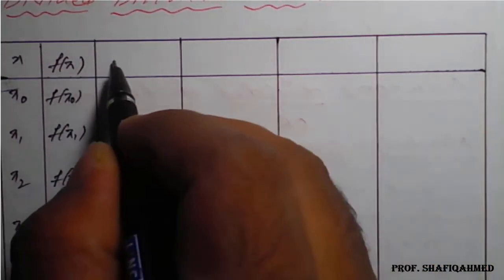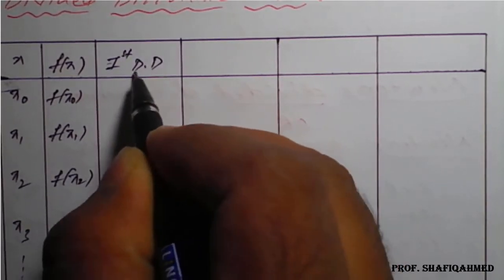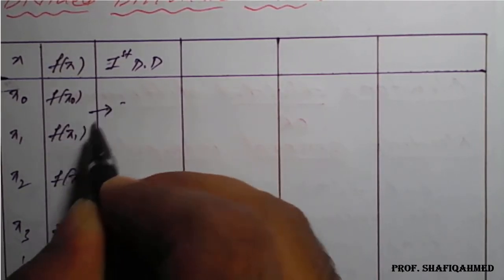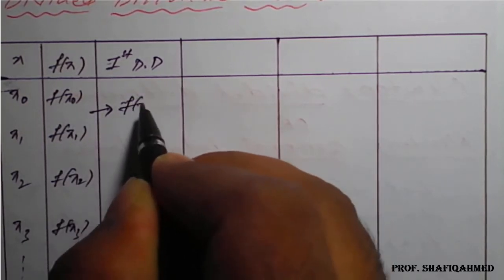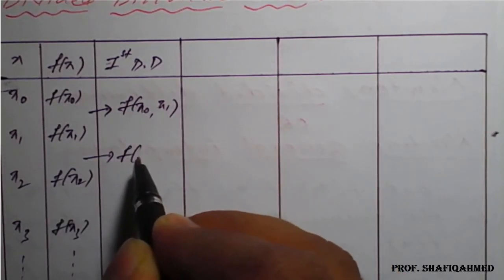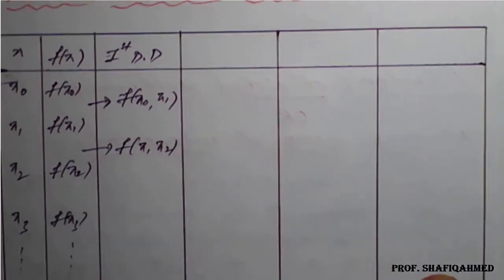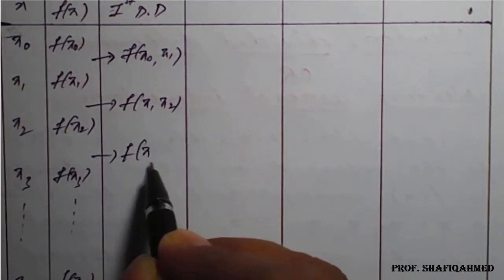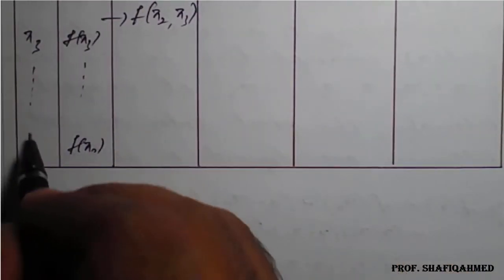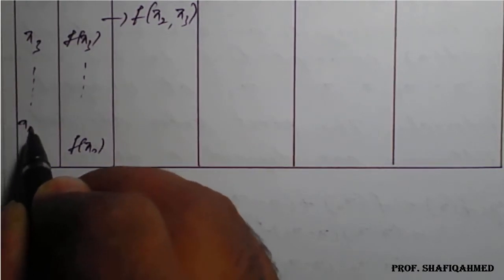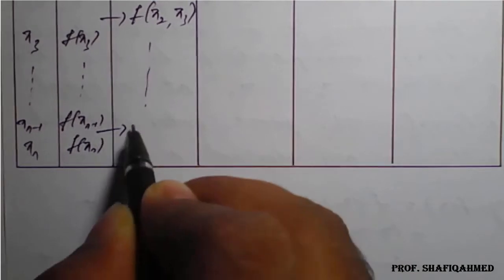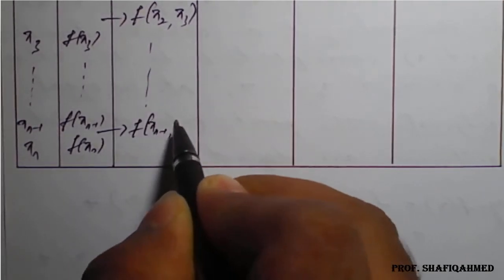In the first divided difference column, between x0 and x1 we get f[x0, x1]; between x1 and x2 we get f[x1, x2]; between x2 and x3 we get f[x2, x3]; and so on. Before xn we have x_{n−1} and before f(xn) we have f(x_{n−1}), so the difference between those gives f[x_{n−1}, xn].